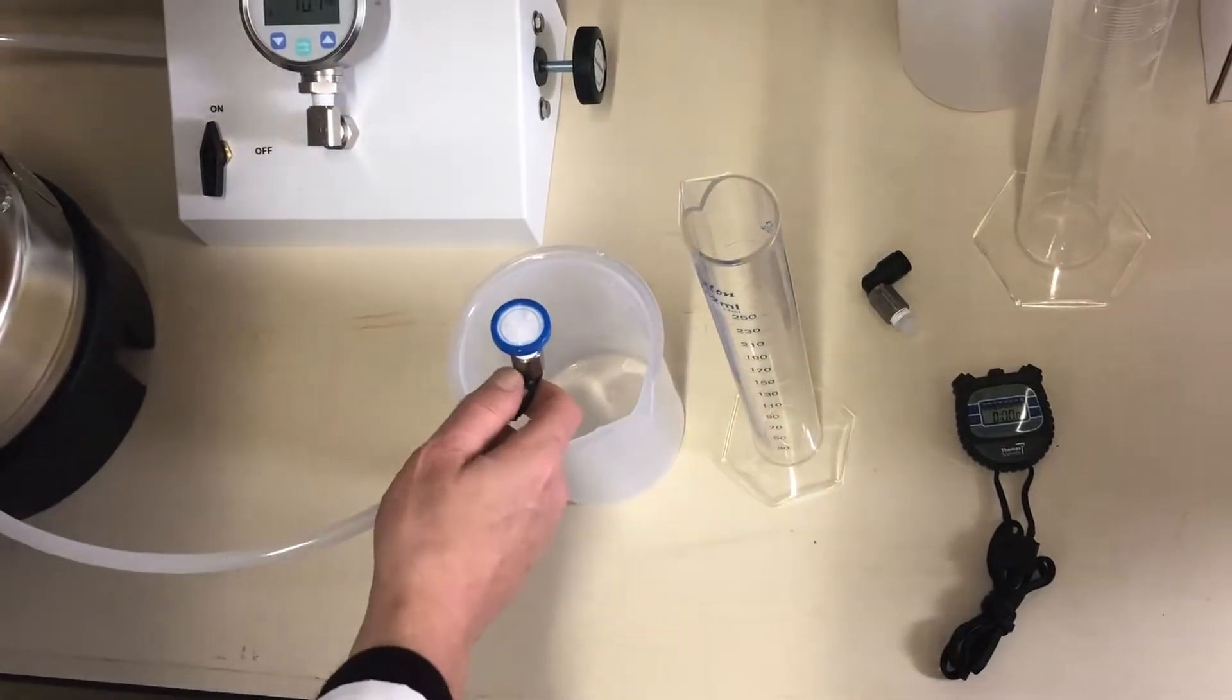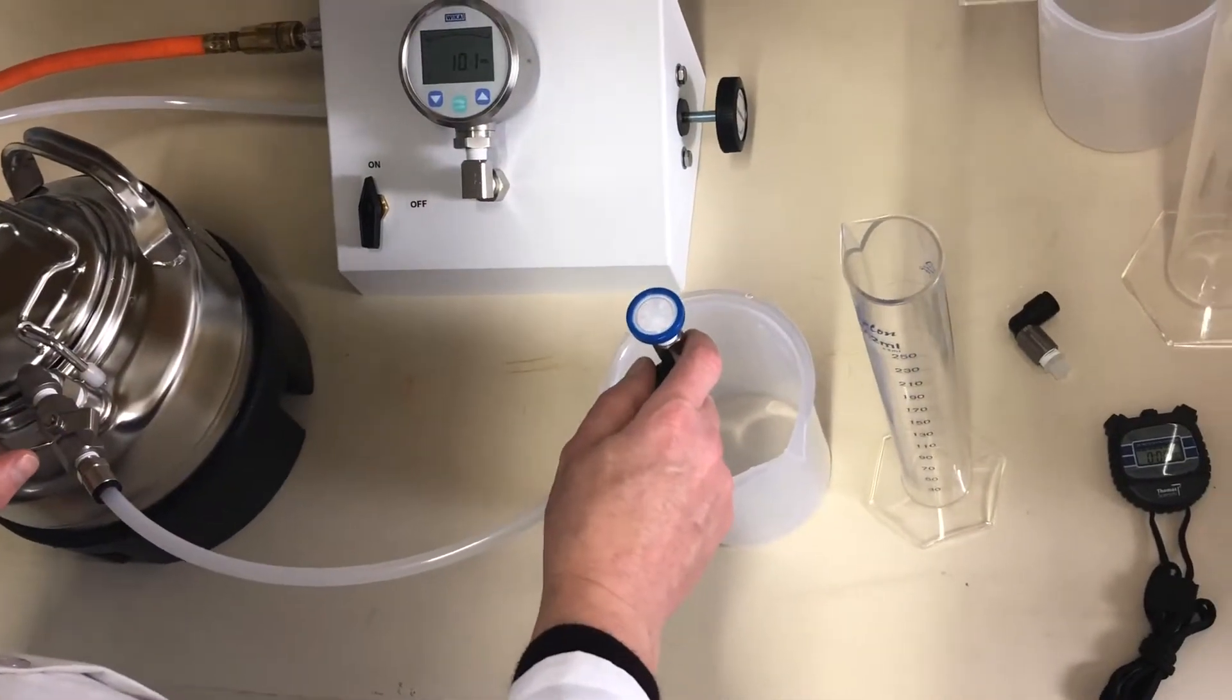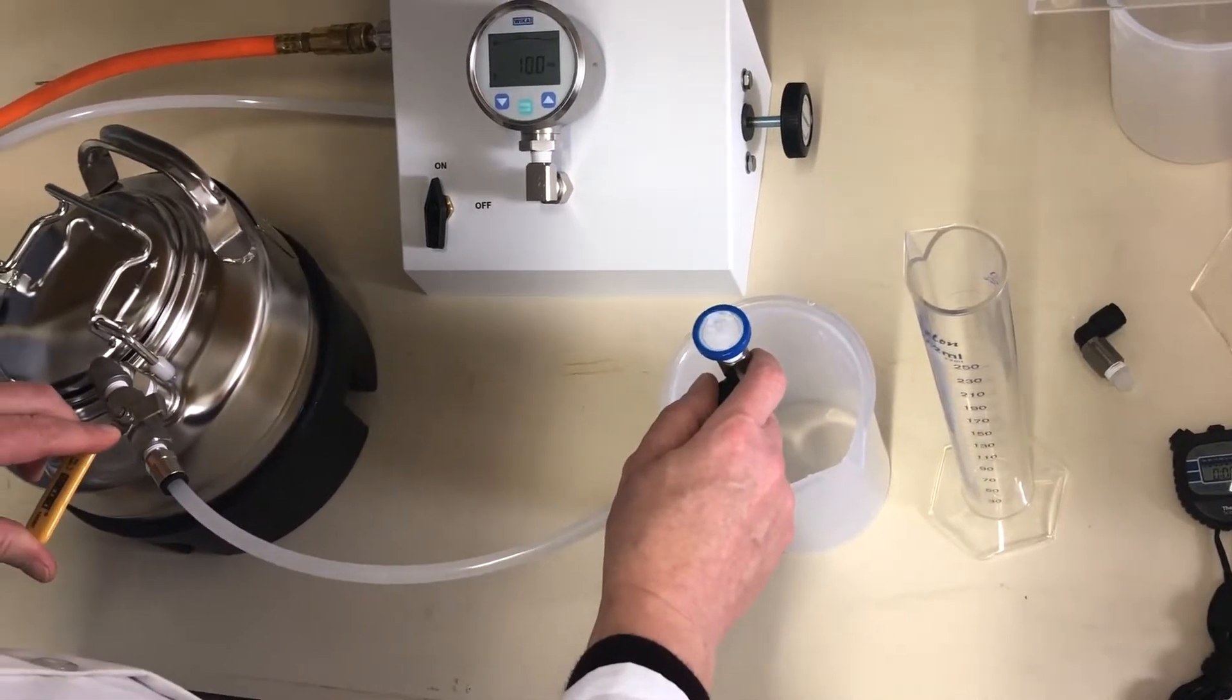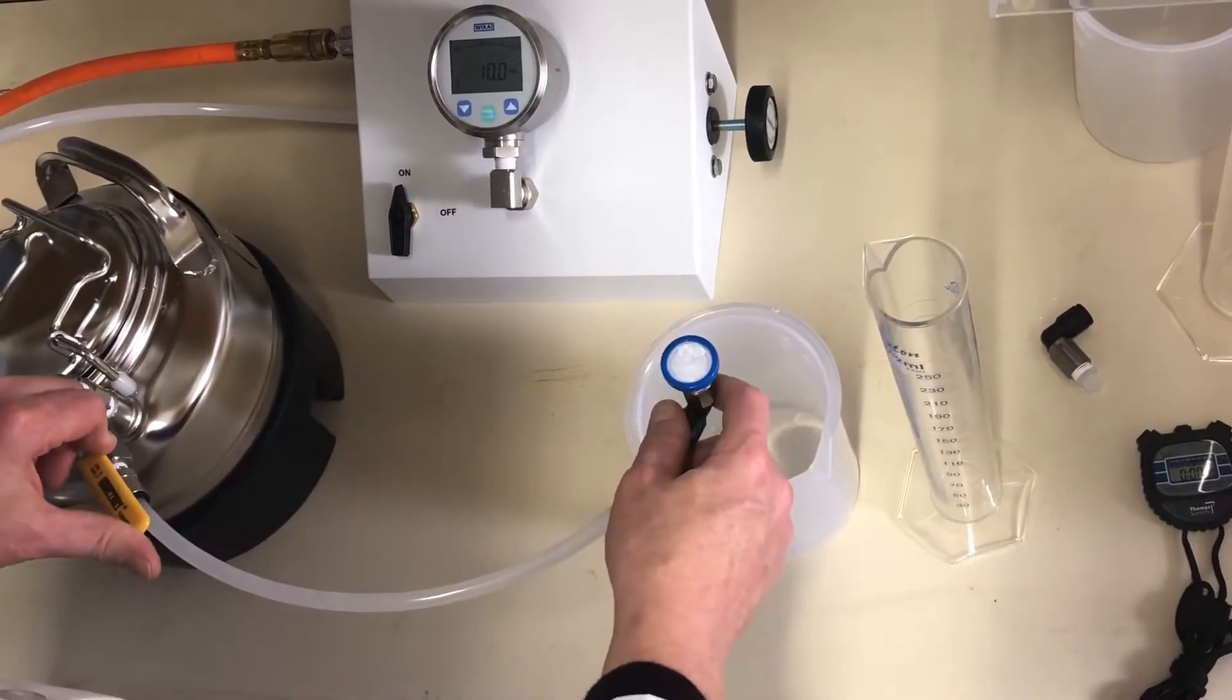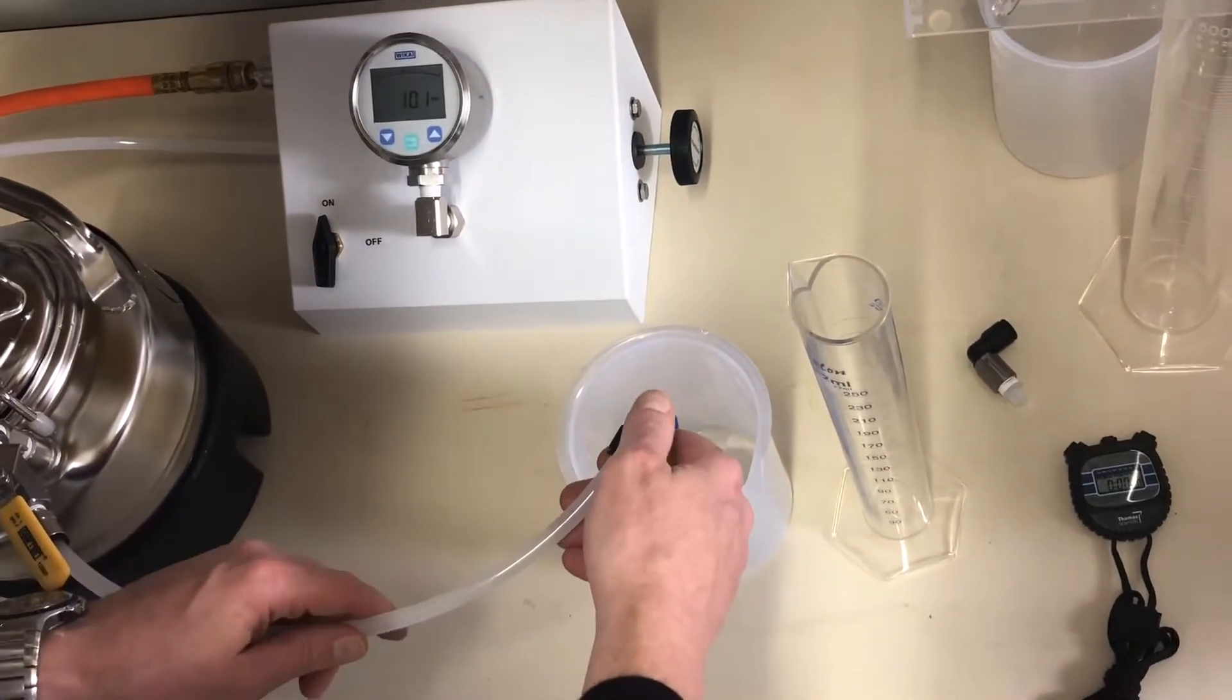Then we'll open the water while the filter outlet is facing up to make sure that we don't trap any air in the line. And once flow is established, we'll turn the filter over, and I think I still airlocked it.